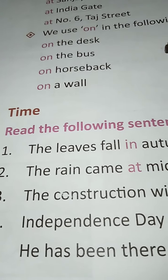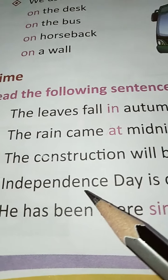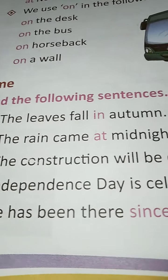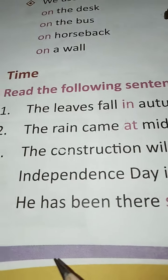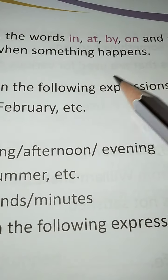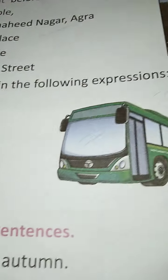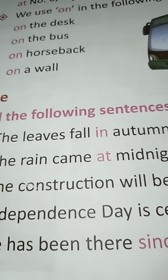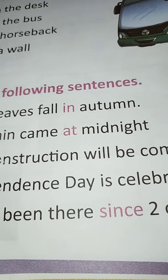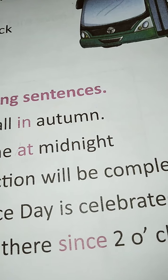Now next is prepositions of time. Read the following sentences: The leaves fall in autumn. The rain came at midnight. The construction will be complete by Sunday. Independence Day is celebrated on 15th August. He has been there since 2 o'clock. In these sentences the words in, at, by, on, and since are prepositions of time — they tell us about the time when something happens.